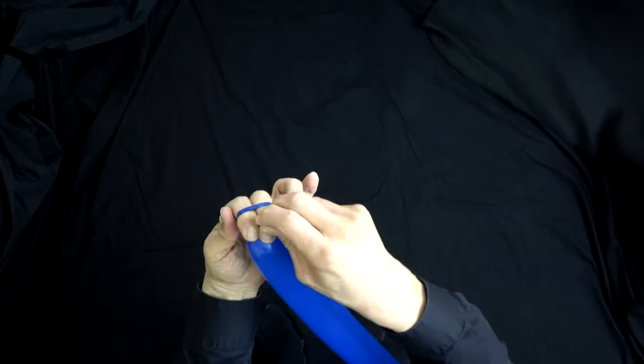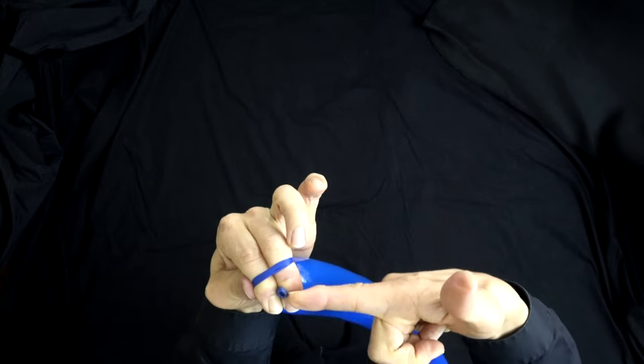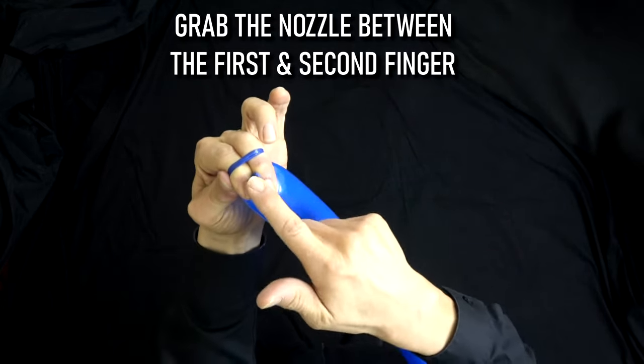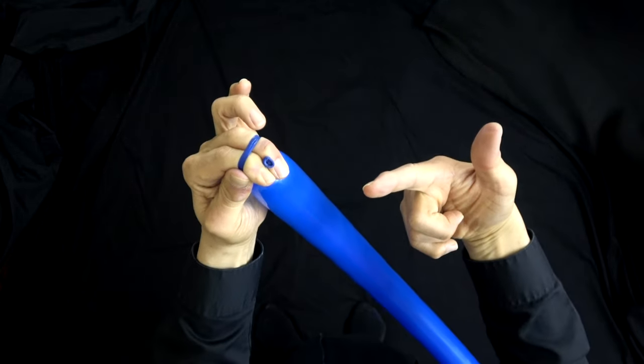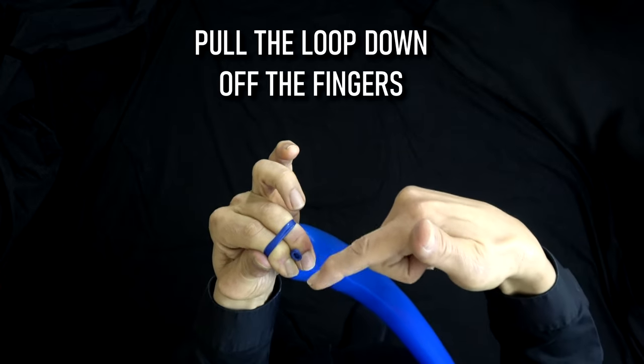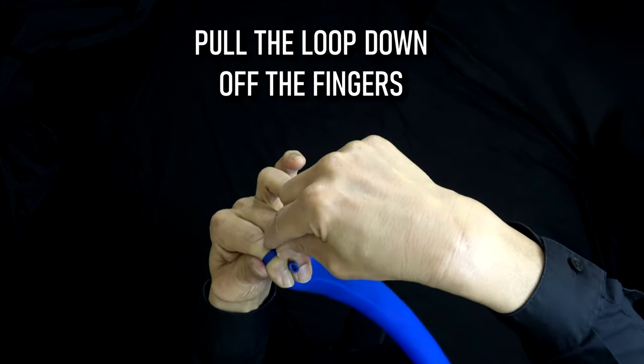Like that. Now I catch the nozzle in between my first and second finger here. Notice I have the loop here. Now all I have to do is pull this loop down over the nozzle and it will tie itself.